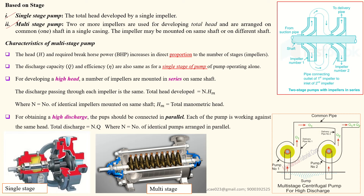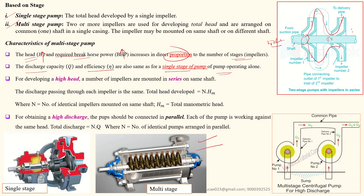The main characteristics of multi-stage pumps: head and brake horsepower increase directly proportional to the number of stages — as the number of stages increases, the head and power consumption also increase. However, discharge and efficiency remain equal to a single-stage pump operating alone. For example, if the first impeller draws 50 liters, the next impeller does not draw additional water — it only sends the same 50 liters forward. So the total output discharge remains 50 liters.